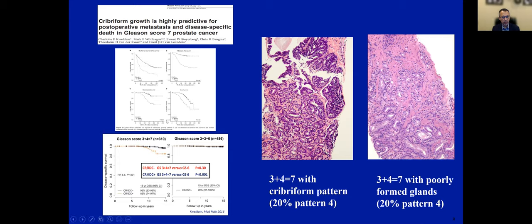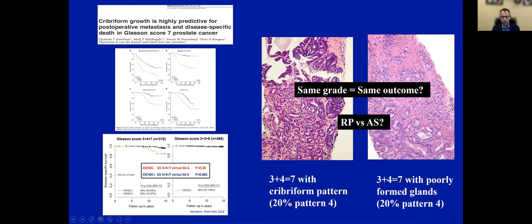The Kaplan-Meier survival data further illustrates this: you can have two patients with 3+4, grade group 2, the same amount of pattern 4 — say 20% — but one made up of cribriform Gleason pattern 4 while another made up of poorly formed Gleason pattern 4. Should patients with cribriform Gleason pattern 4 be excluded from active surveillance while patients with poorly formed glands may still be eligible? These remain very important questions that still need to be addressed prospectively.